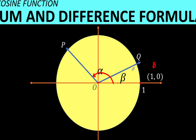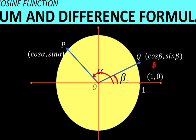Let the measure of angle QOB be beta. This means if the measure of angle POB is alpha, then the coordinate of point P is (cosine alpha, sine alpha). And if the measure of angle QOB is beta, then the coordinate of point Q is (cosine beta, sine beta).